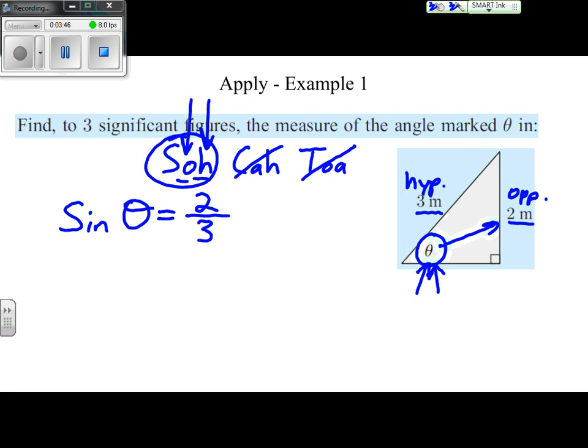We have set up our trig ratio. Now we need to do algebra, and there is a variable - it's this angle right here. In order to get this alone we need to undo the operation that's happening. We've never undone sine before, so we are going to be introduced to the new opposite or inverse operation for sine. The inverse operation for sine is inverse sine and we abbreviate that with just sine to the negative one power.